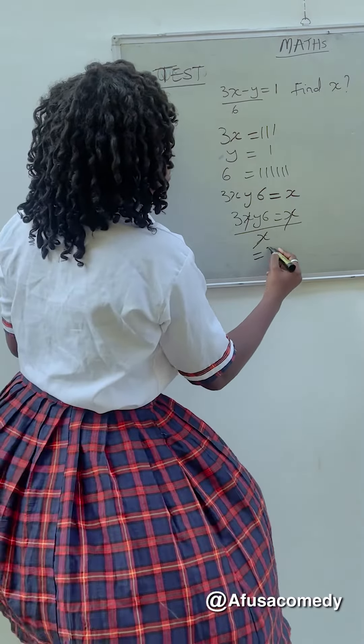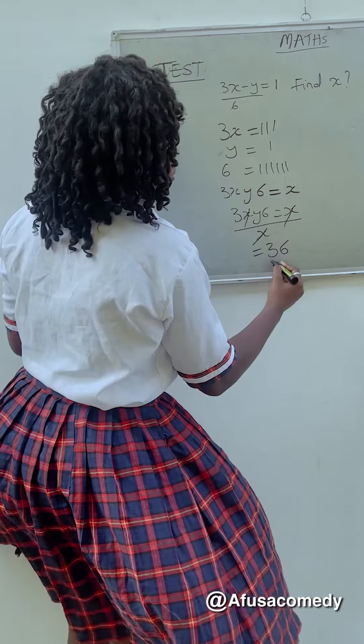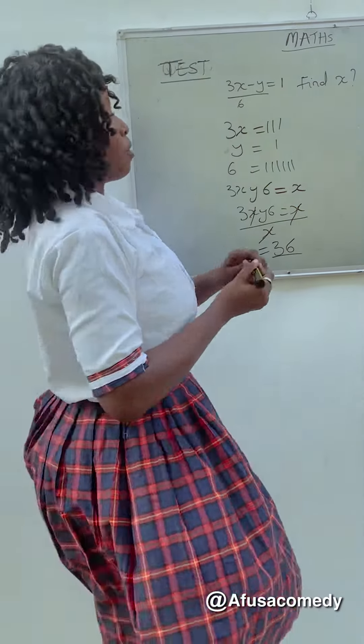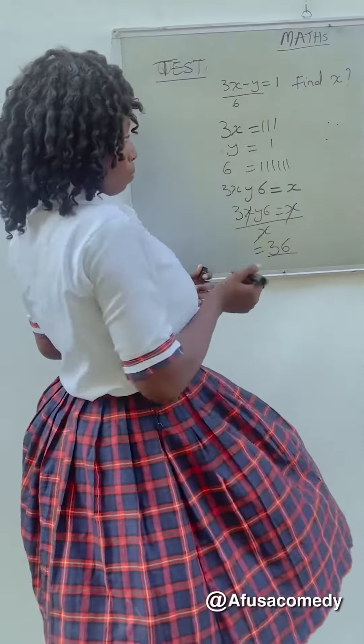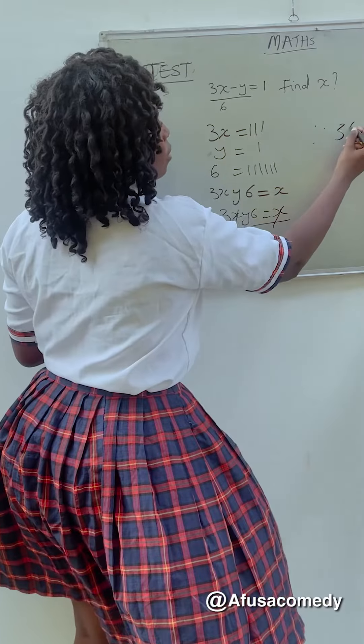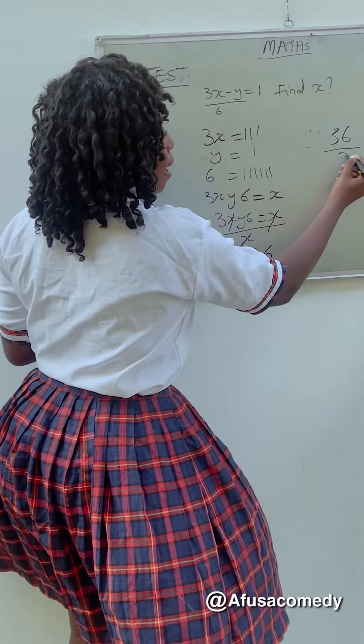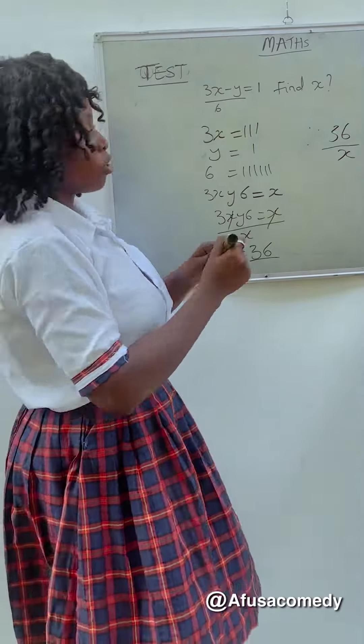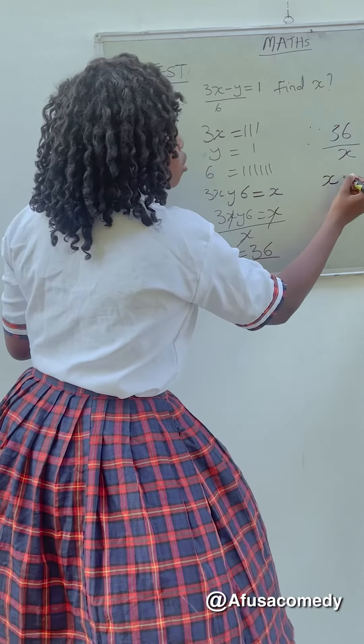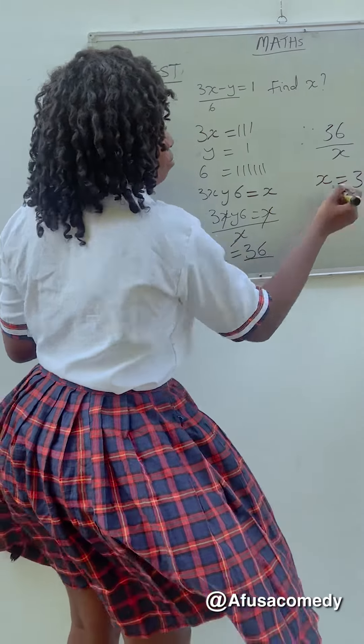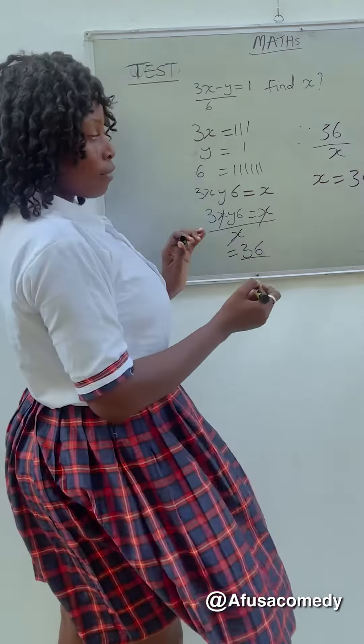So right now, x will cross x, yes. So right now, we will now have 36, we will now have 36. So therefore, this x, x will now be over x, so x is equal to 36. Then 36 is equal to x.